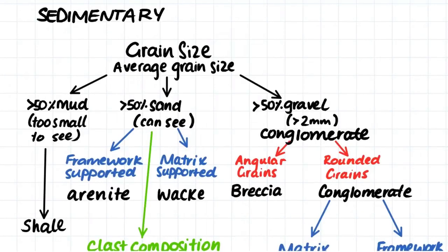So when we first try to classify sedimentary rock, we first look at the average grain size and how much of the rock is made up of each different type of grain size. The largest type being gravel, where the grain is larger than 2mm in diameter. If more than 50% of the rock is made up of these gravel-sized grains, then we would call it a conglomerate.